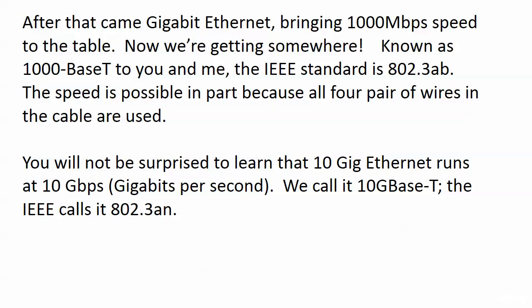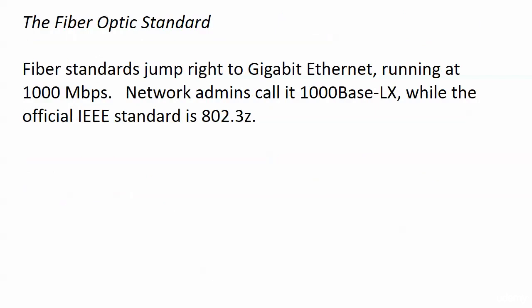10 Gigabit Ethernet runs at 10 gigabits per second — we call it 10GBaseT, and the IEEE calls it 802.3an. Watch that G carefully because it's easy to gloss over in an exam question — make sure you see or don't see that G when distinguishing Gigabit from 10 Gigabit Ethernet. For fiber optic, the standards jump right to Gigabit Ethernet. Network admins call it 1000BaseLX — that LX is a tip-off that you're talking about fiber — and the official IEEE standard is 802.3z. That Z could stand for 'zoom' if you want a memory aid.